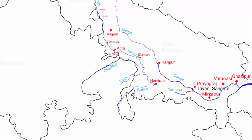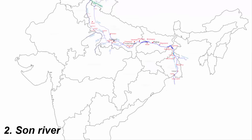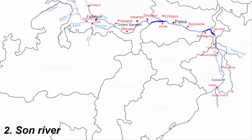Yamuna continues southeast towards the city of Hamirpur, where the Betwa river joins it. After flowing about 50 to 60 kilometers further, the river reaches the village of Chilla near Fatehpur district, where the Ken river joins Yamuna. From Fatehpur, Yamuna heads towards Prayagraj (Allahabad), where it joins the Ganga and becomes its tributary. This is the second right bank tributary of river Ganga — the Son river.